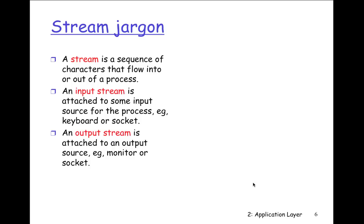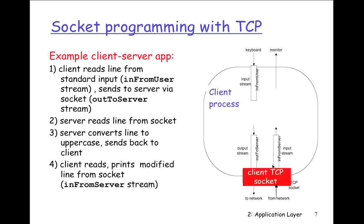These phones are as powerful as computers. Two Android devices could be connected via a socket, reading a stream back and forth. A stream is a sequence of characters that flow in and out of a process. The input stream is attached to some input source — a keyboard or a socket. The output stream is attached to the output — a monitor or a socket. The output could go to a screen or into another phone, and you could use this for transferring files or communicating via text message.